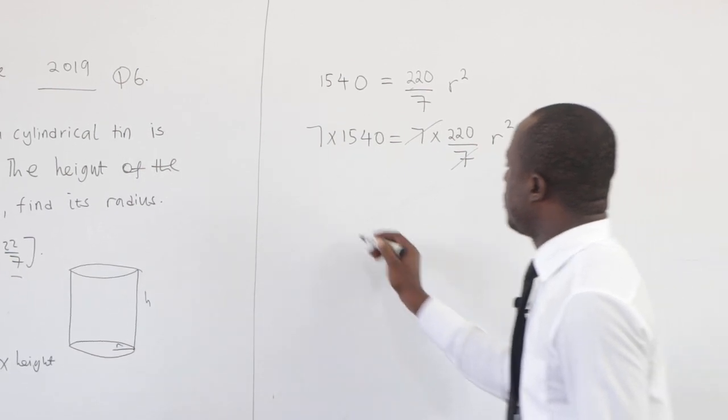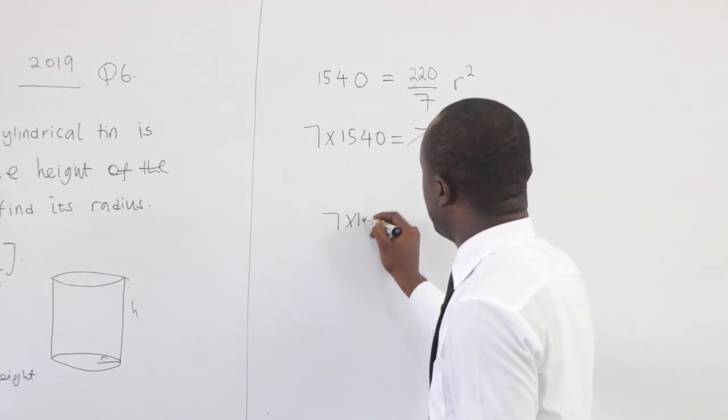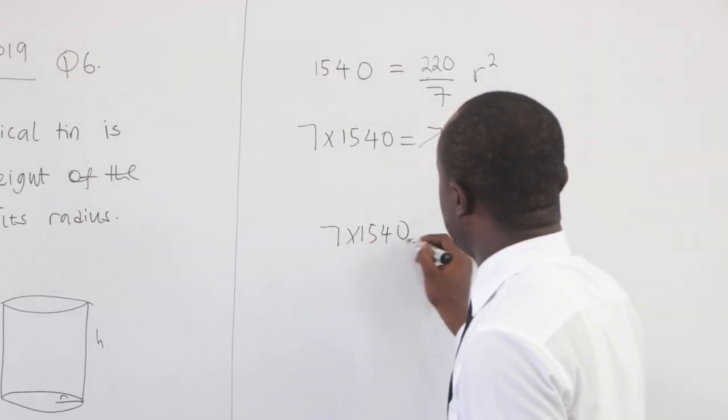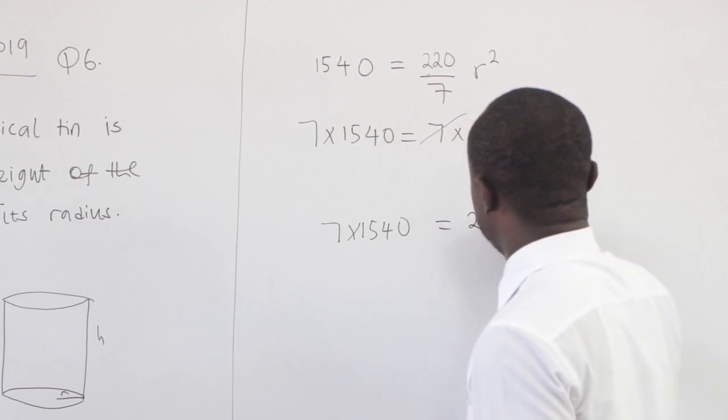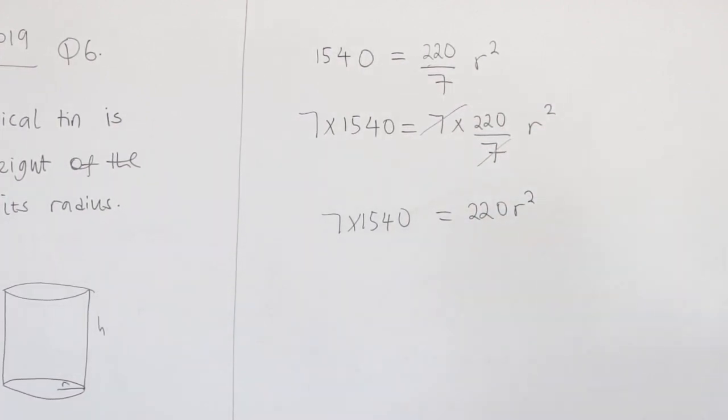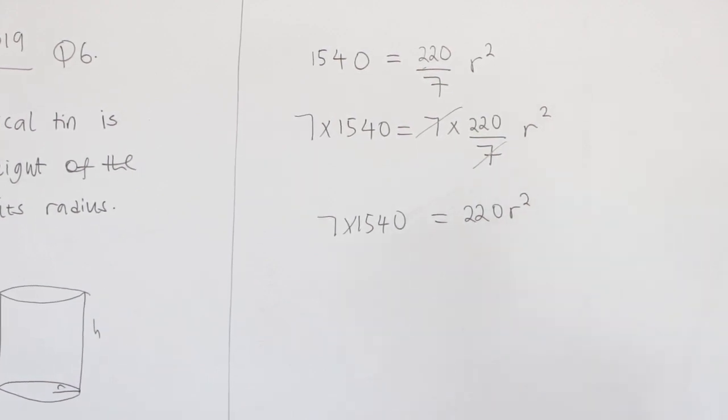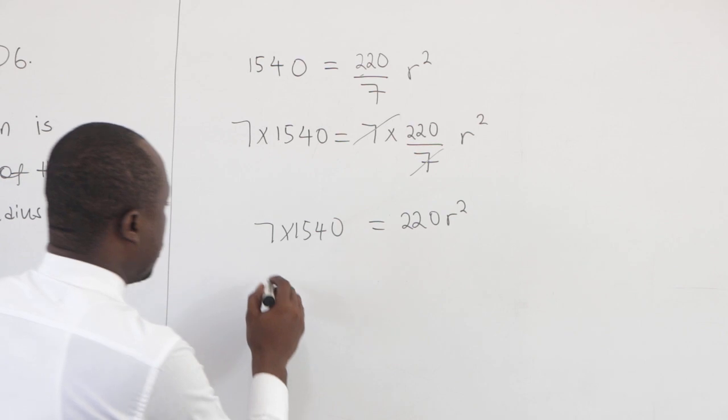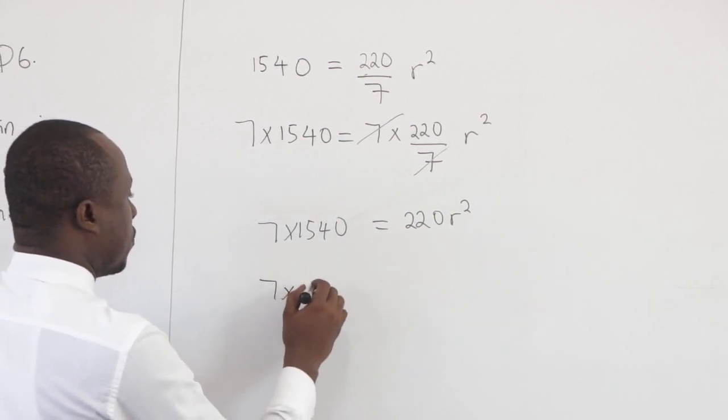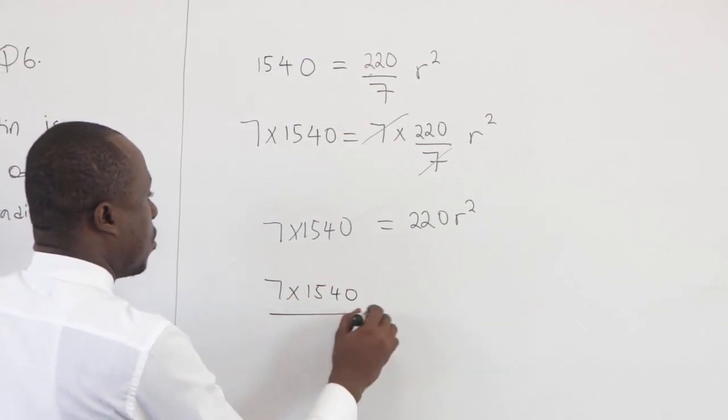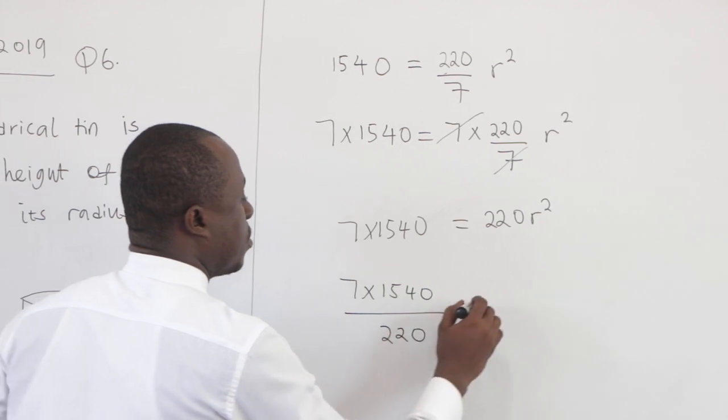So you have 7×1,540 equal to 220r². We want to find r, so we have to divide by what is multiplying the r. So clearly we have 7×1,540 all over 220 equal to r².